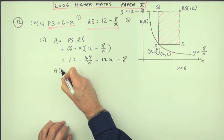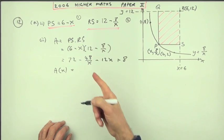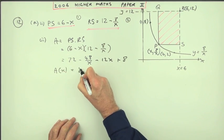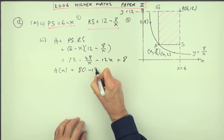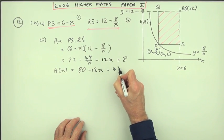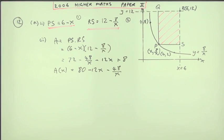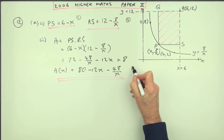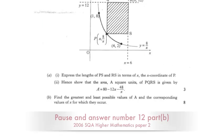So altogether you've got for A—and I'll say in terms of x because I've only got x, not the y's anymore—I've got 80 minus 12x minus 48 over x. Now you get the mark, that's mark 3.